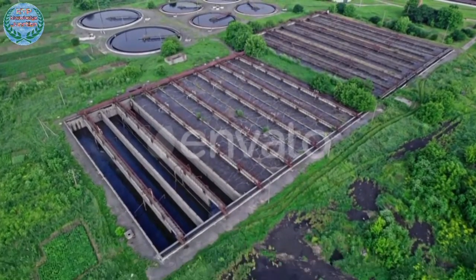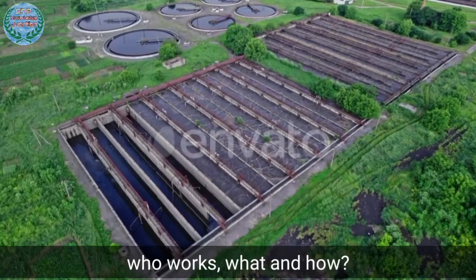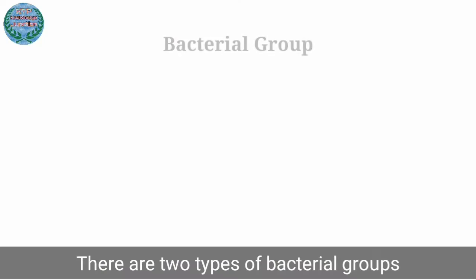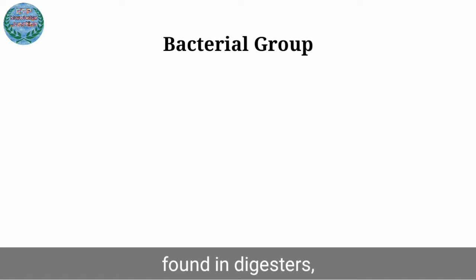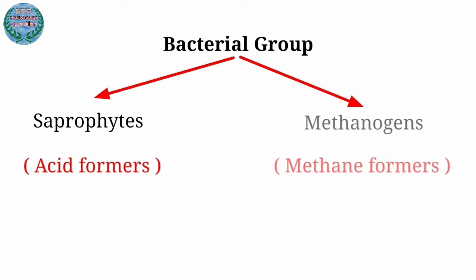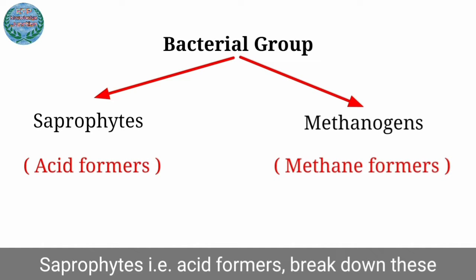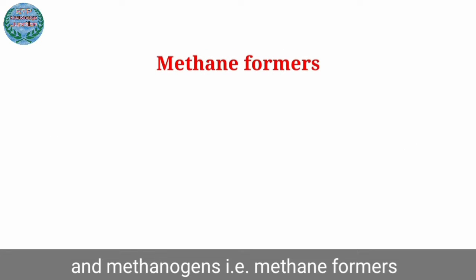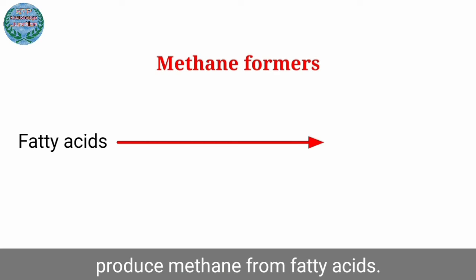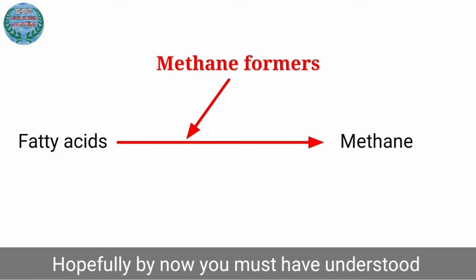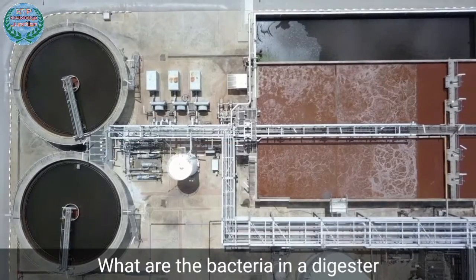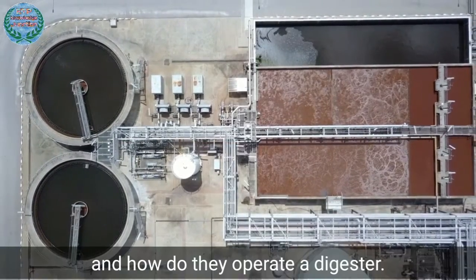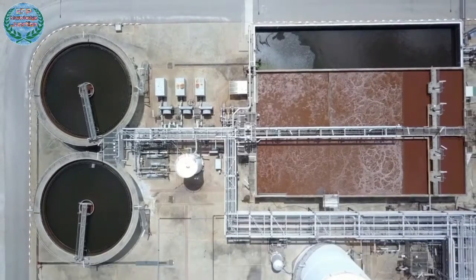Let's once again quickly understand who works, what and how. There are two types of bacterial groups found in the digester: saprophytes and methanogens. Saprophytes, that is acid-formers, break down complex organic molecules to form fatty acids, and methanogens, that is methane-formers, produce methane from these fatty acids.